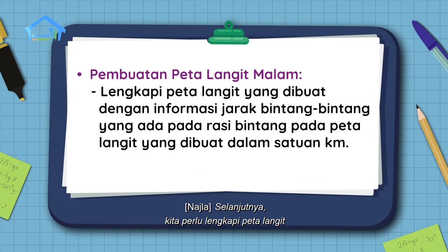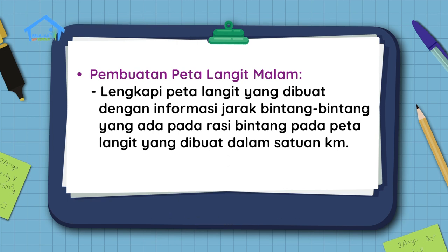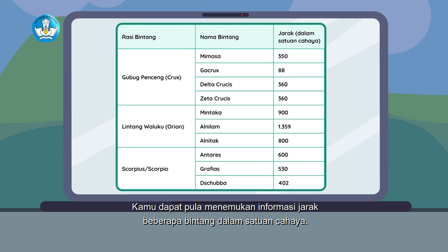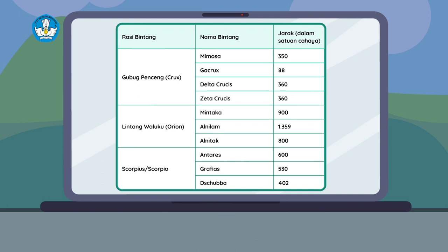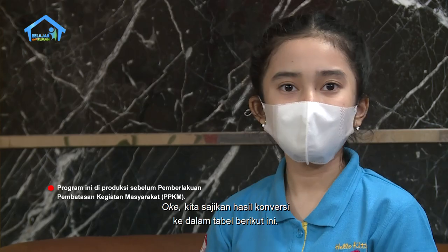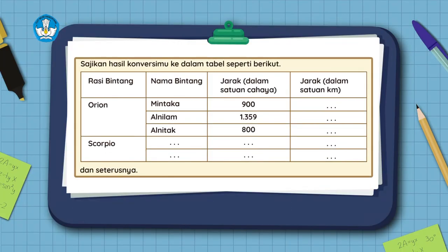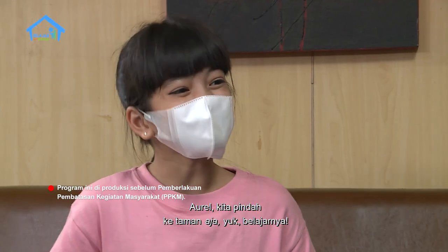Kita perlu melengkapi peta langit yang dibuat dengan informasi jarak bintang-bintang yang ada pada rasi bintang, dalam satuan kilometer. Pada kegiatan ini kamu dapat pula menemukan informasi jarak beberapa bintang dalam satuan cahaya. Ada tabelnya. Kita sajikan hasil konversi ke dalam tabel berikut ini. Aurel, kita pindah ke taman saja yuk belajarnya. Ayo!